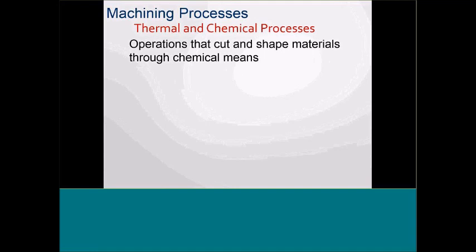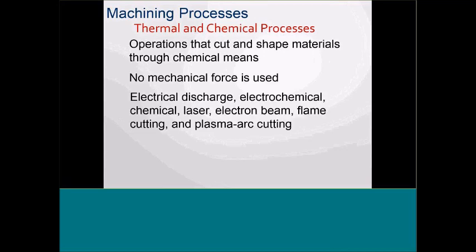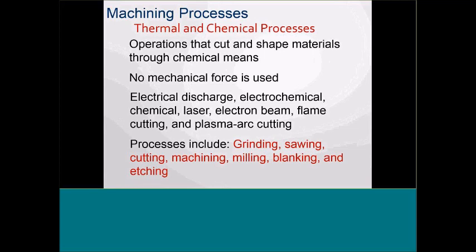We also talk about thermal and chemical processes — we're starting to see more and more of that. There's no mechanical force used. We look at electrical discharge machines, electromechanical processes, and with advanced manufacturing increasingly the laser and electron beam. Flame cutting has been around a long time, and so has plasma arc. We just purchased a plasma CNC machine. I'll also be taking pictures of our lab to show you what Edison looks like — and if you'd like to bring your class in, I'll give them a tour and we may even let them run it.